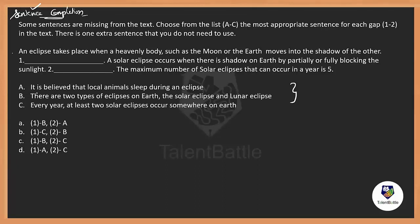Can I go with A as the first blank? 'It is believed that local animals sleep during an eclipse.' It may be a fact, but is it required in the sentences? Everywhere the sentences talk about: an eclipse, a solar eclipse, the maximum number of eclipses. Is there a requirement to talk about local animals sleeping during an eclipse? Might not be. Now, 'there are two types of eclipses on earth — the solar eclipse and the lunar eclipse' — this sounds like a good fit, but where can it be used? And 'every year at least two solar eclipses occur somewhere on earth' — I've got the clue. In the last sentence they talk about the maximum number of solar eclipses, and C talks about the least number: at least two. So C must be definitely in the second blank.